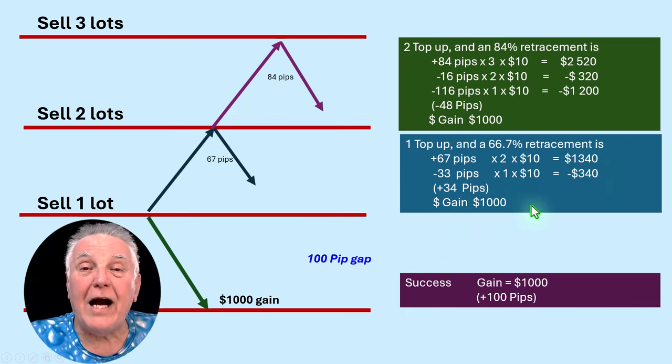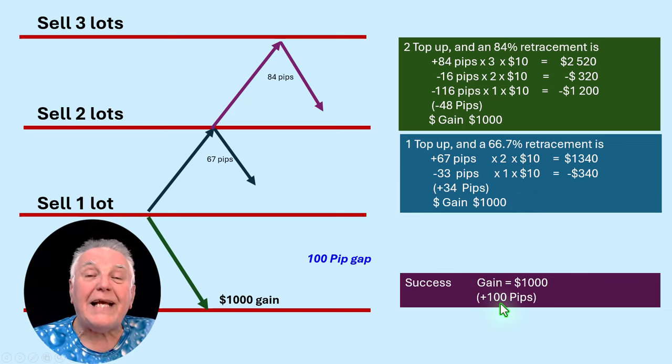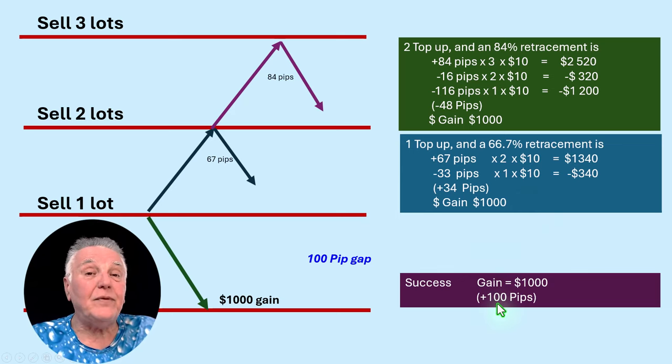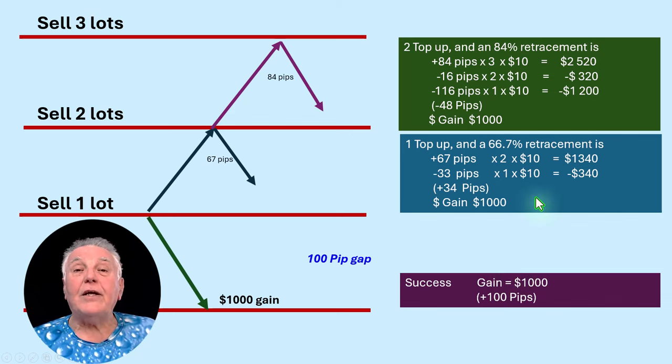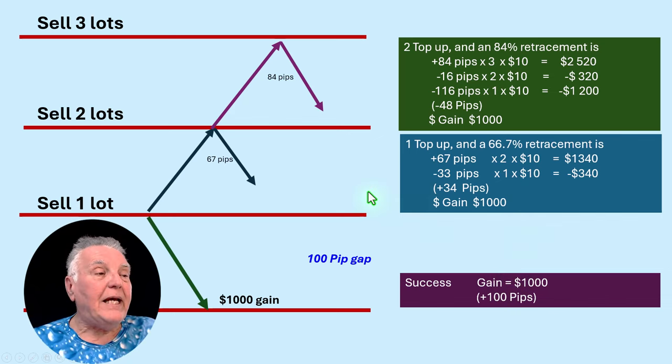And your negative there is $340. If you add those two together then you still get a gain of $1,000, which is exactly the same as the successful deal would have had.